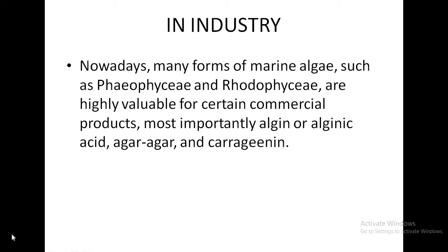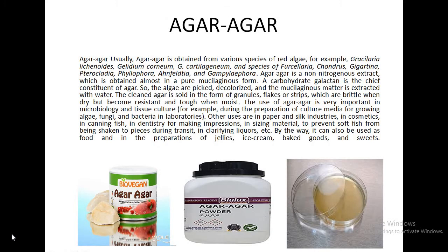In industry, members of Phaeophyceae and Rhodophyceae are the source of many chemicals like algin (alginic acid), agar-agar, and carrageenan. Agar-agar is used to make semi-solid medium like nutrient agar. It is obtained commercially from species of Gelidium, Gracilaria, Acanthopeltis, Chondrus, and Gigartina — members of red algae.